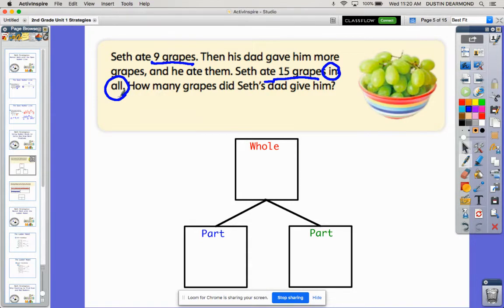So let's think through our story. One thing about story problems is if you close your eyes and try to think through what happened, it helps you visualize and come up with what you need to do. So close your eyes for a second and just listen. Seth ate nine grapes. Picture Seth eating nine grapes from a bowl. They're all gone, he ate nine of them.